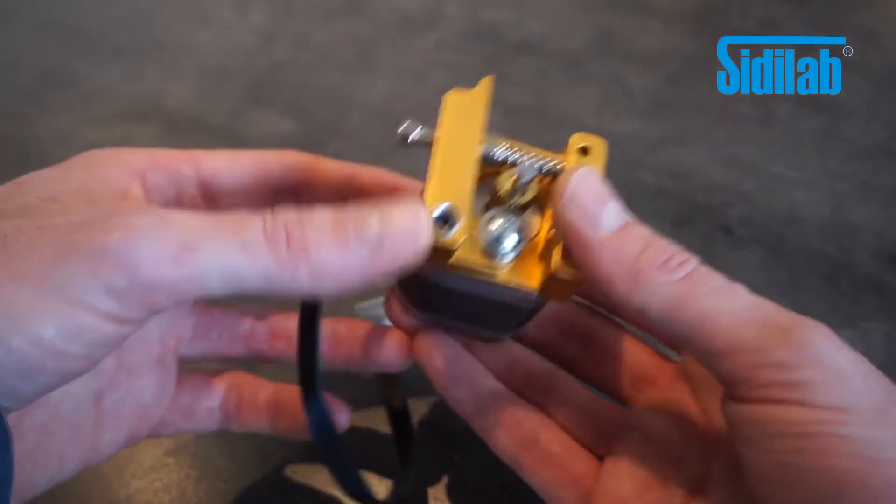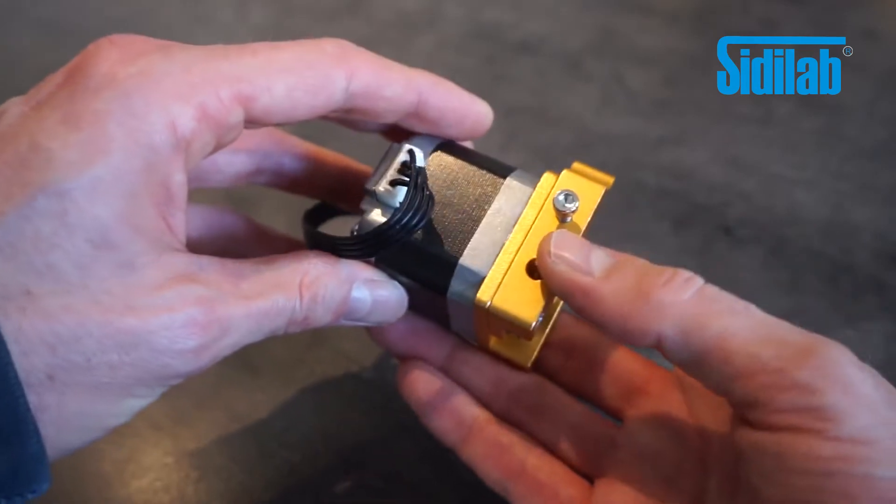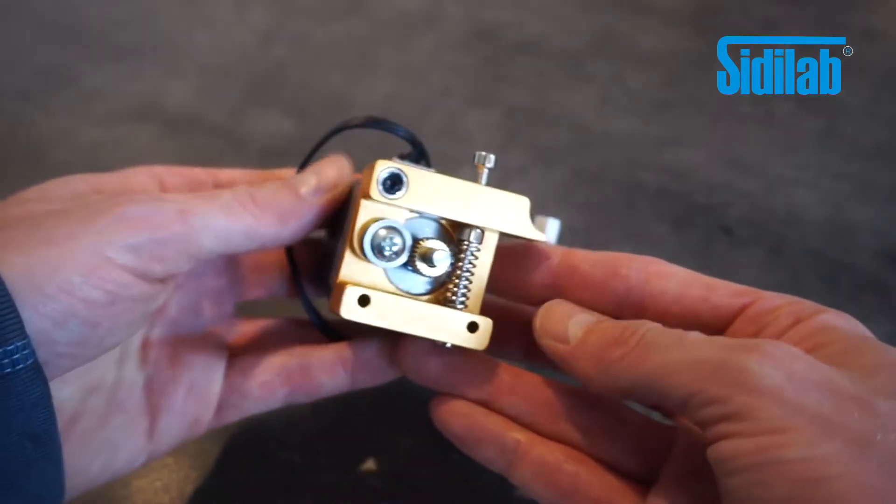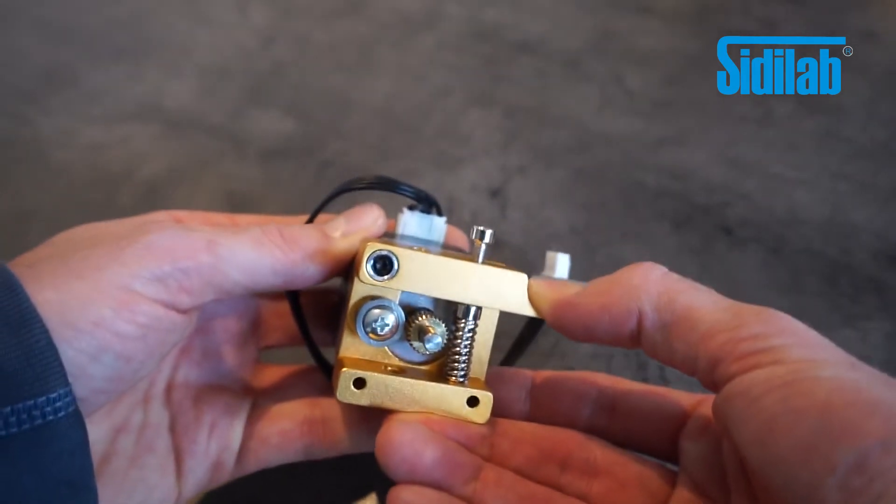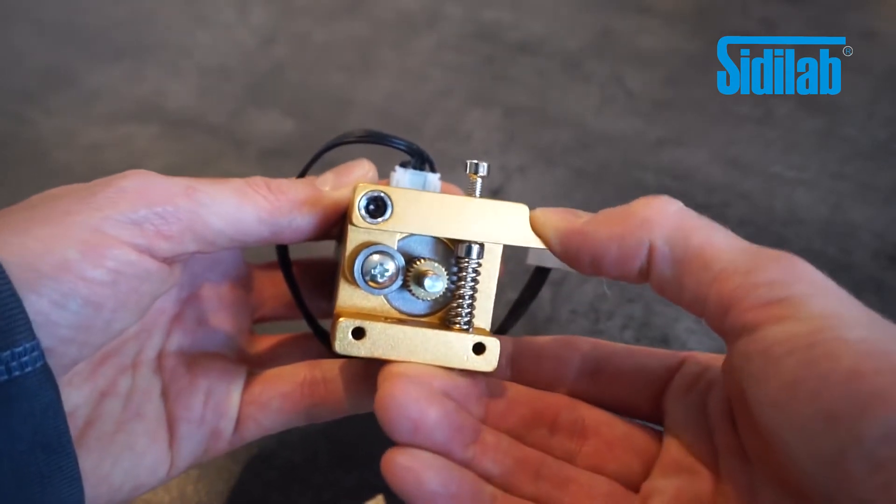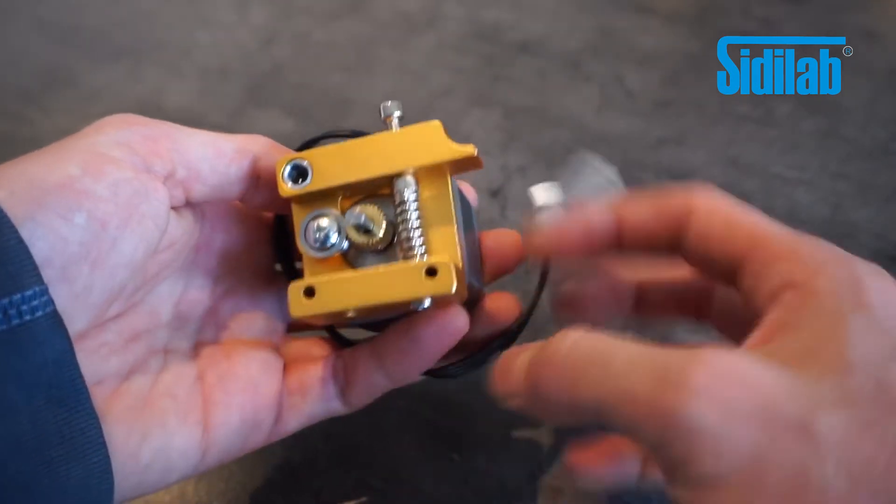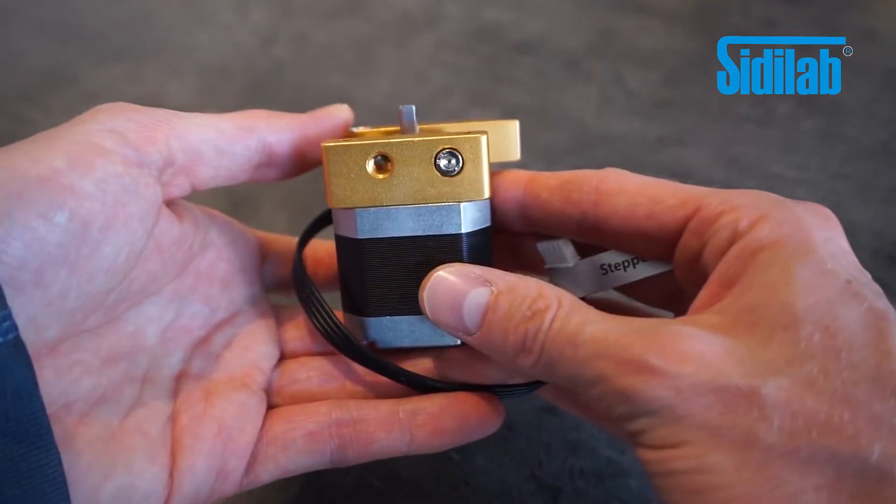The bowden extruder can be placed behind the base to drive the filament through the PTFE tube. I'm quite curious about the print quality but the 3D print head was not the main reason for purchasing the Dubot so if it prints well I'll consider that a bonus.